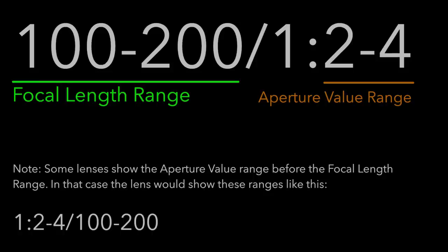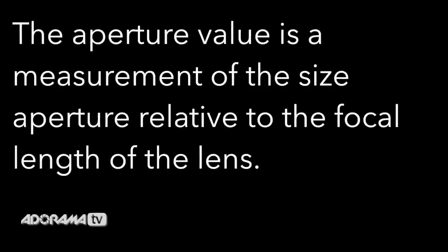This is very common on consumer lenses because it costs more to make a zoom lens with a constant aperture value. If we wanted our fictitious lens to have a constant aperture, the aperture opening would have to grow from 50mm wide to 100mm wide as our lens zoomed from 100mm to 200mm. So let's review: the aperture value is a measurement of the hole size relative to the focal length of the lens. A small F number is a large opening, and a large F number is a small opening.